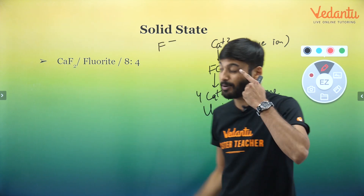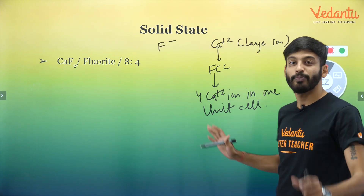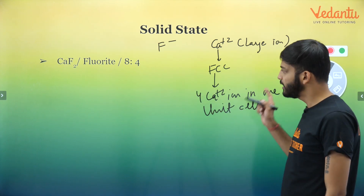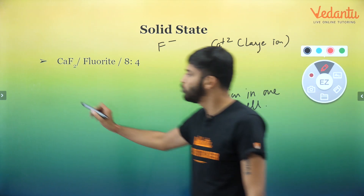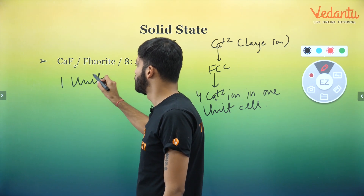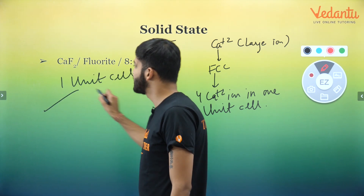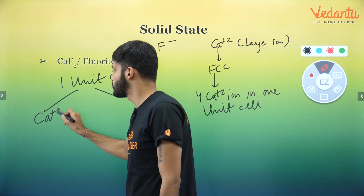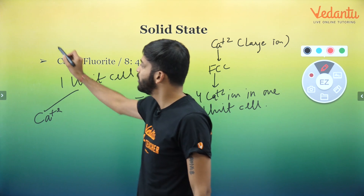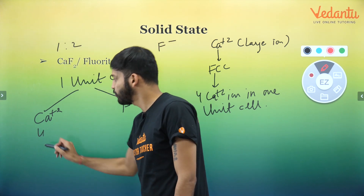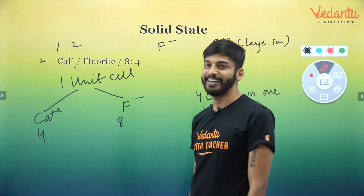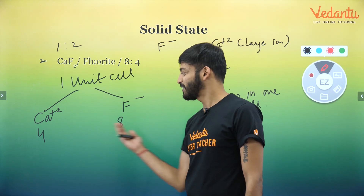F⁻ will occupy the void — the tetrahedral void. In one unit cell, it has Ca²⁺ and F⁻. The ratio here is 1:2. So if there are 4 Ca²⁺, then how many F⁻ should there be? 8.